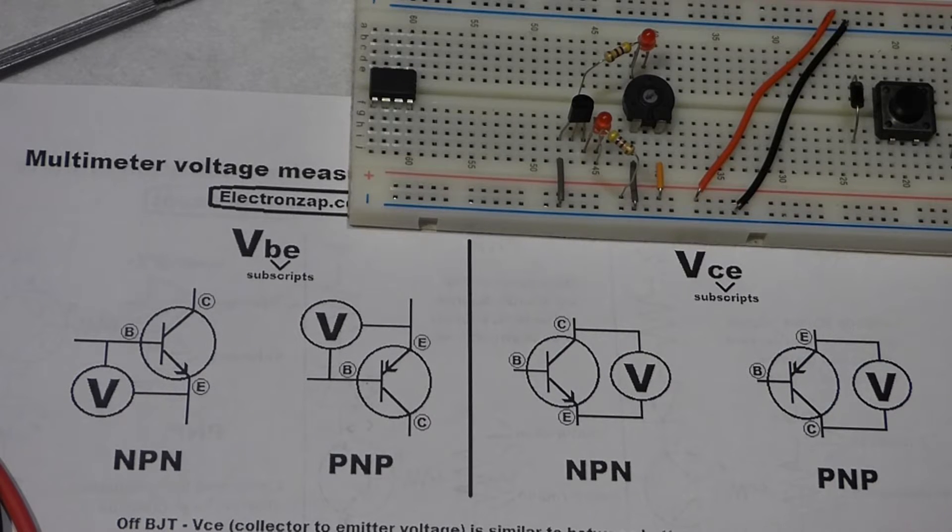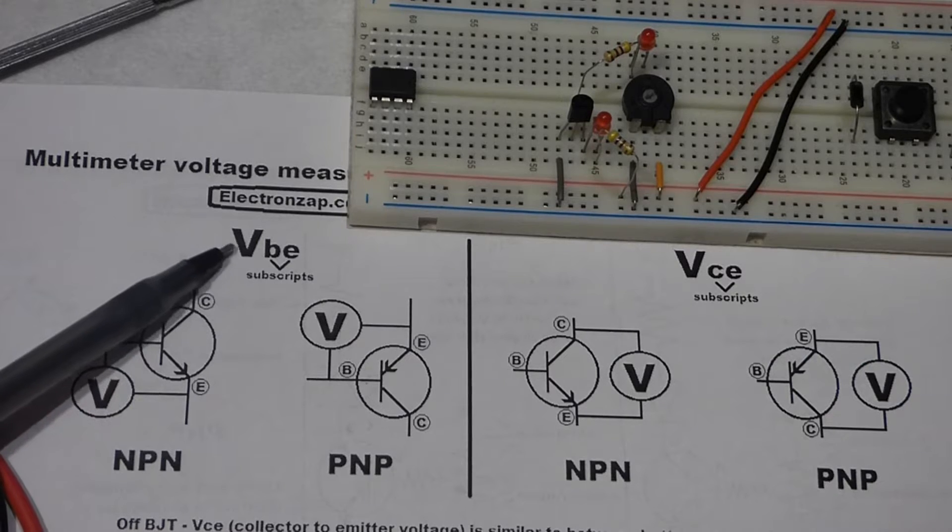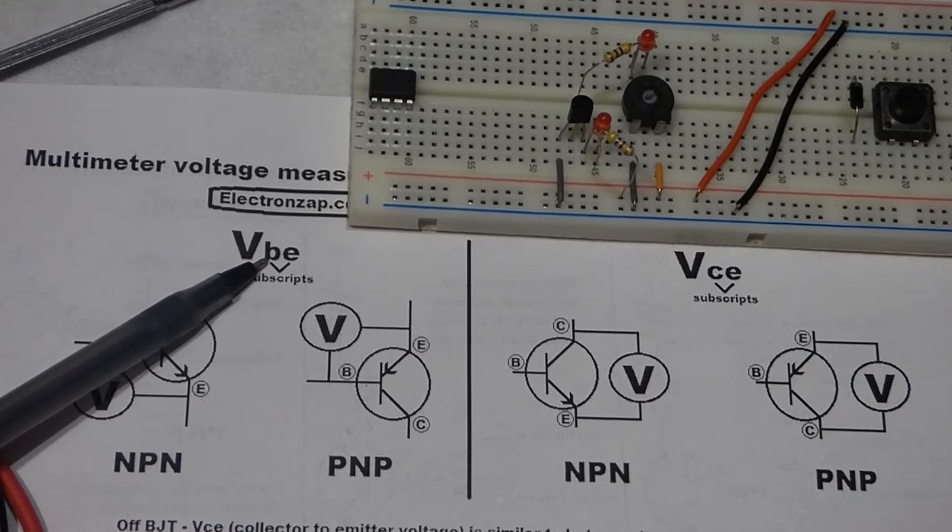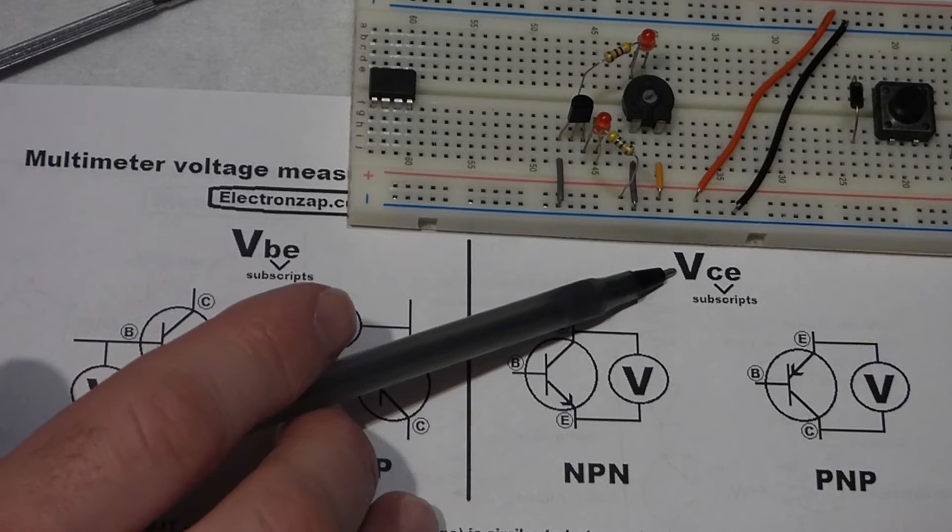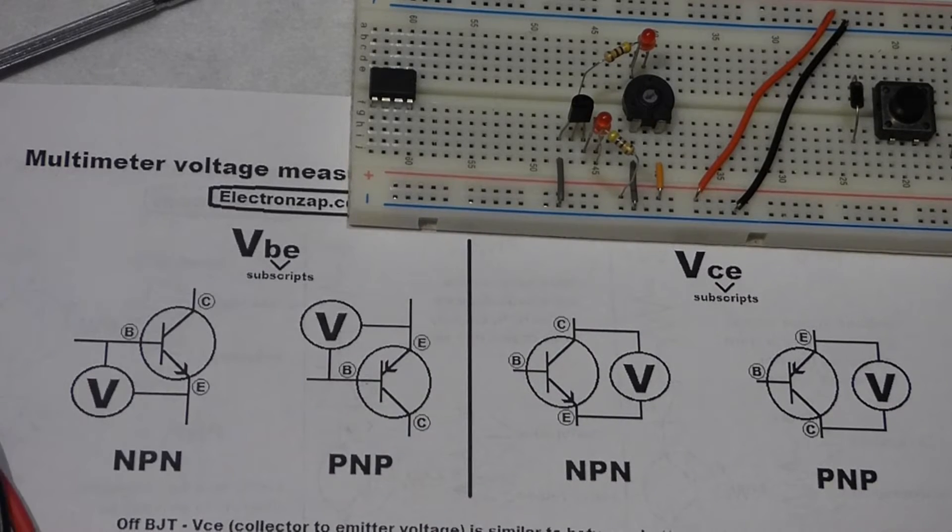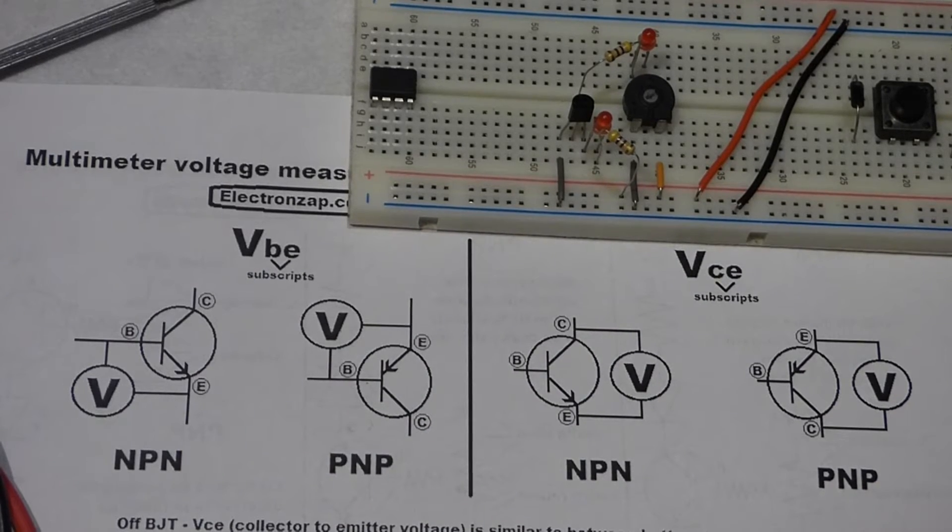There's two separate currents flowing through the transistor and that means there's two voltages. We have the voltage across the base and the emitter and then the voltage across the collector and the emitter.